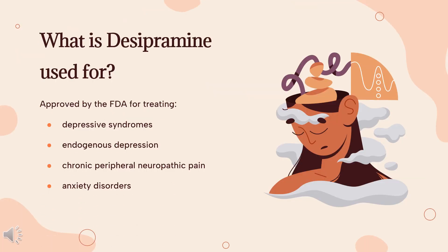What is desipramine used for? It is used for relief of symptoms in various depressive syndromes, especially endogenous depression. It has also been used to manage chronic peripheral neuropathic pain, as a second-line agent for anxiety disorders such as panic disorder and generalized anxiety disorder, and as a second- or third-line agent in ADHD management.